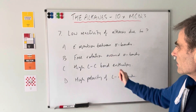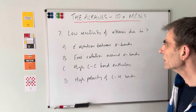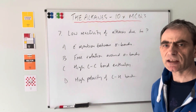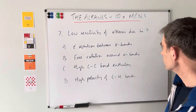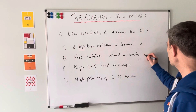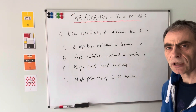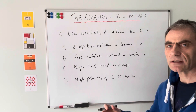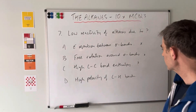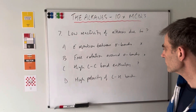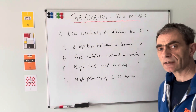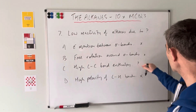Question seven: which of these statements explains the low reactivity of alkanes? Electron repulsion between sigma bonds explains the shape of a molecule, not reactivity - so not that. Free rotation around sigma bonds has nothing to do with reactivity. The high carbon-carbon bond enthalpy: when things react, you have to break bonds, so that is linked to reactivity - a possible answer. High polarity of C-H bonds is wrong because carbon and hydrogen have virtually the same electronegativity and their bonds are non-polar. So the answer is C: high carbon-carbon bond enthalpy.